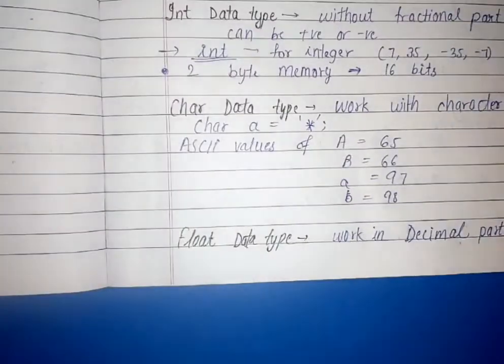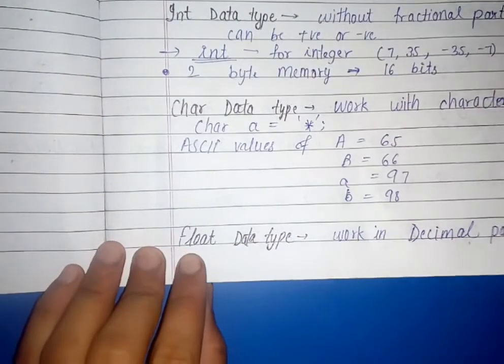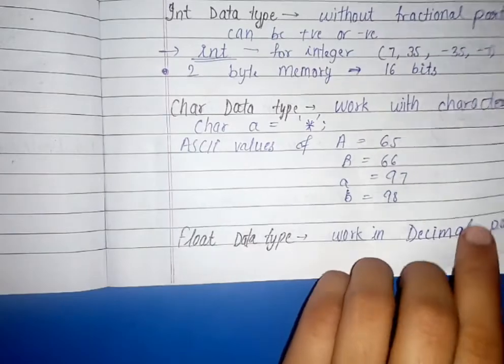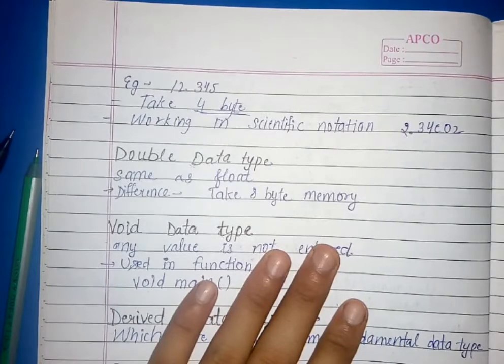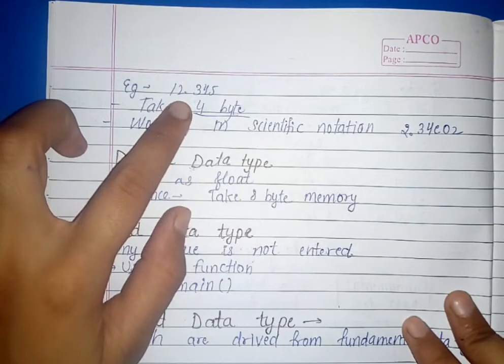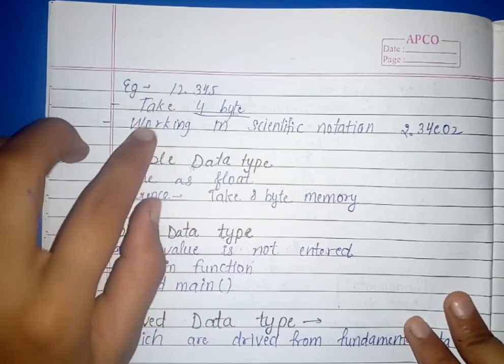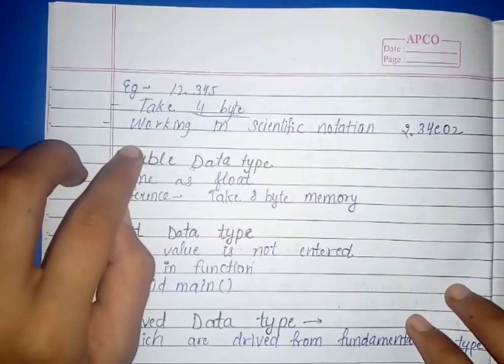Then, Float Data Type. Fundamental Data Type is many parts. Float Data Type is 4-byte memory. Now, we are working on the decimal part. We can work on decimal part in it. For example, it is 12.345. It means that it is a fractional part and decimal part. We can work on the 4 byte memory. I had already told you the 4 byte memory.